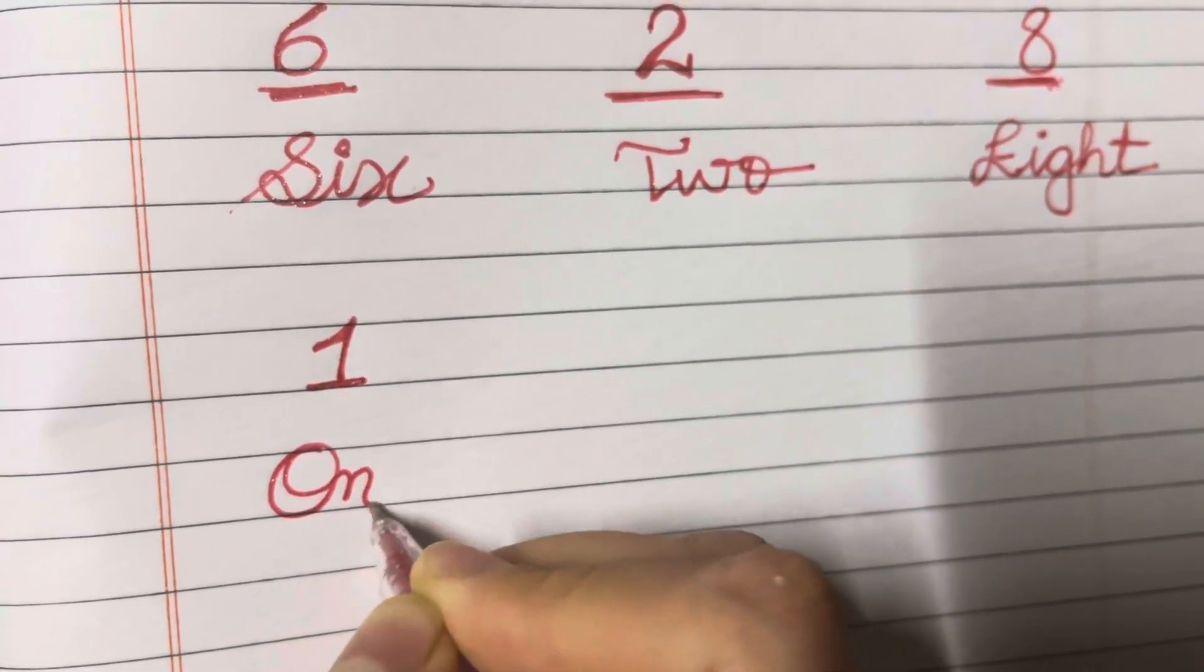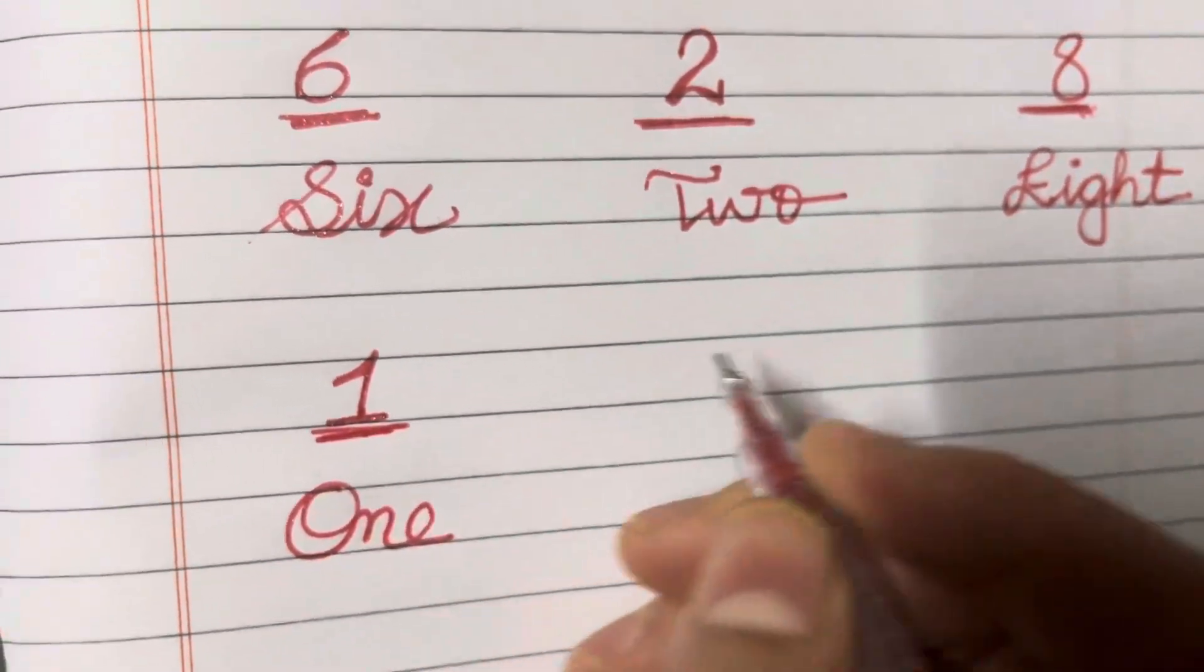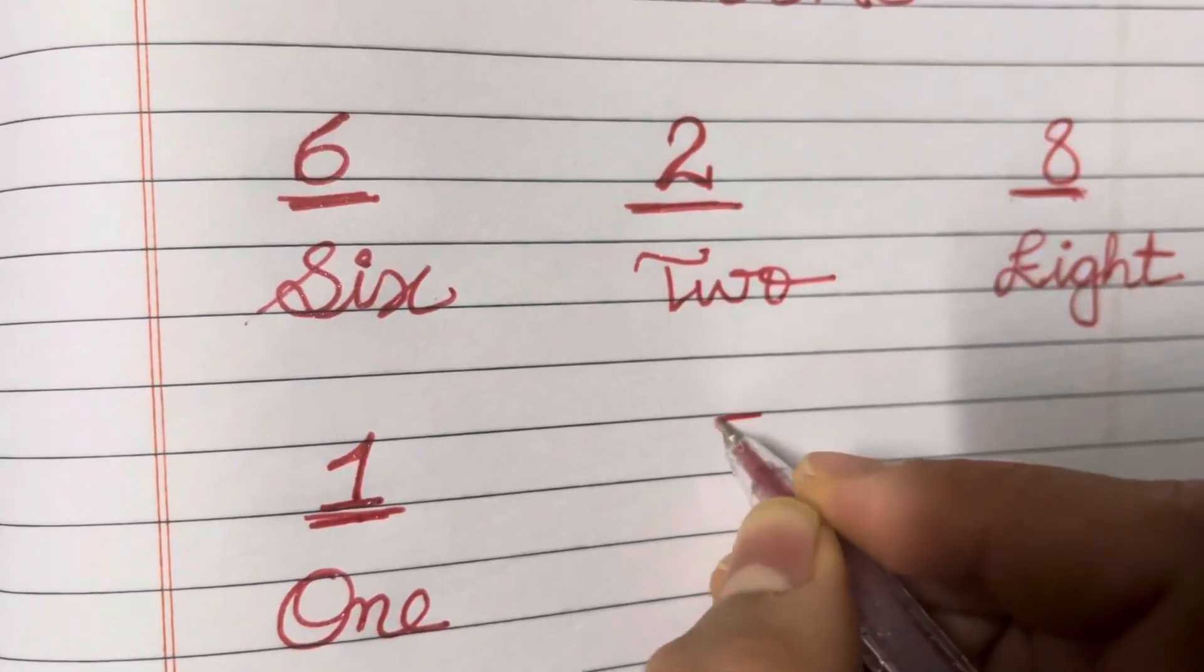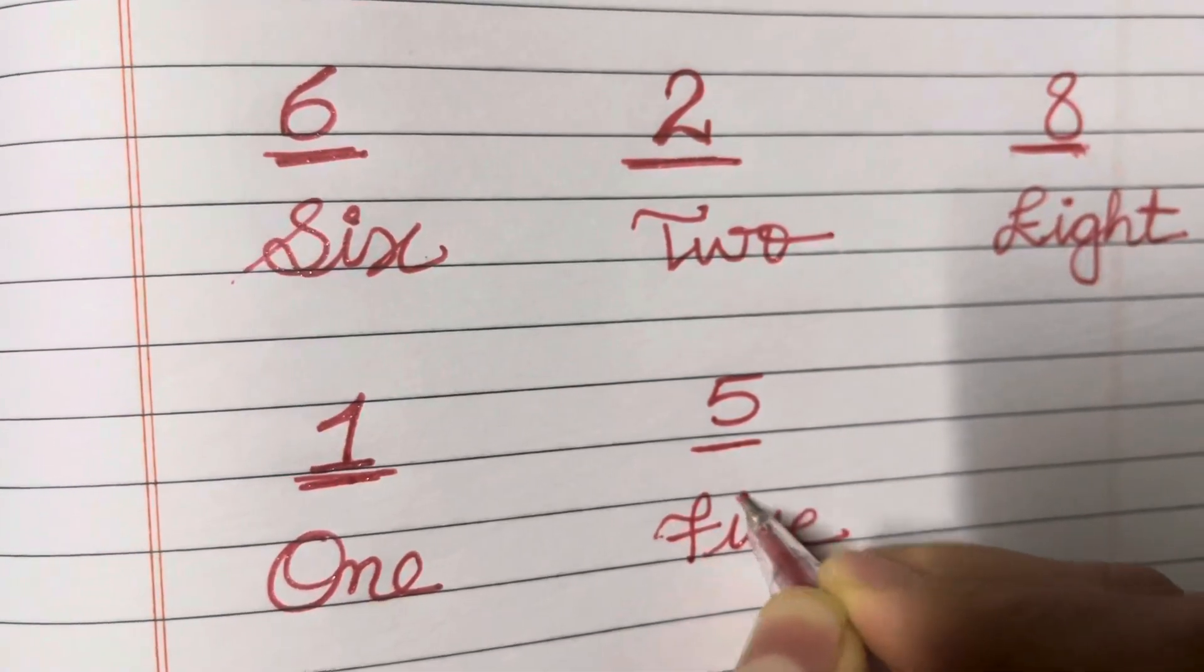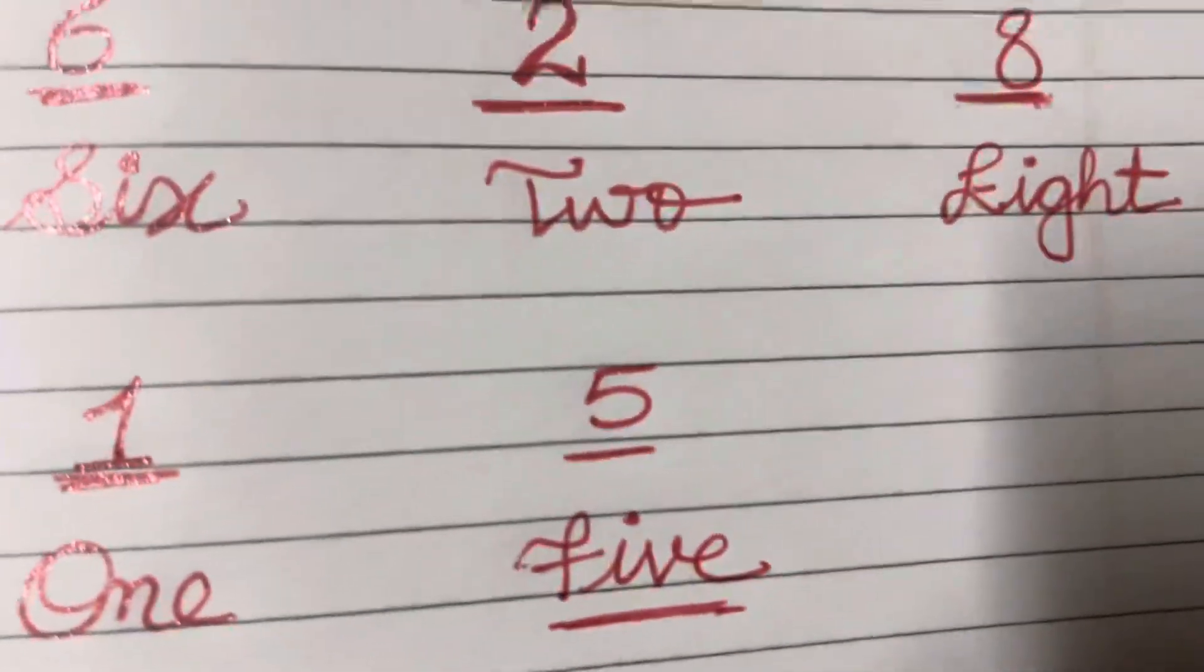O-N-E. Next number is number 5. What's the spelling of 5? F-I-V-E.